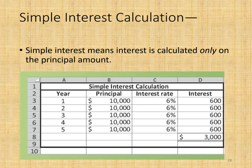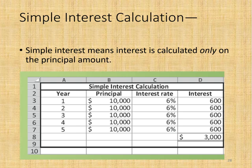Simple interest means that interest is calculated only on the principal amount — you do not earn any interest on the interest you accrue. Compound interest means that interest is calculated on the principal and all the interest earned up to that point. Compound interest assumes that all interest earned will remain invested at the same interest rate, meaning it is not withdrawn and spent.